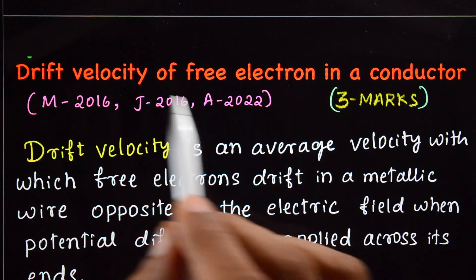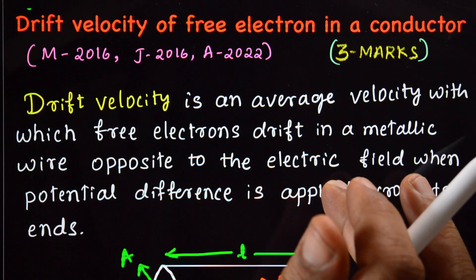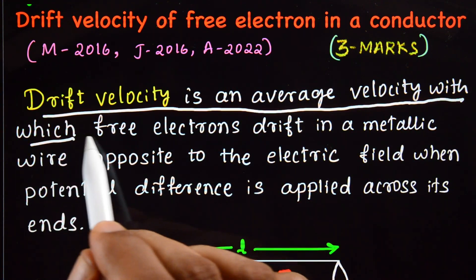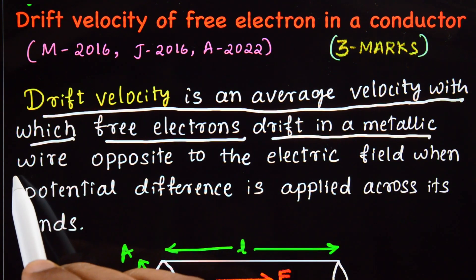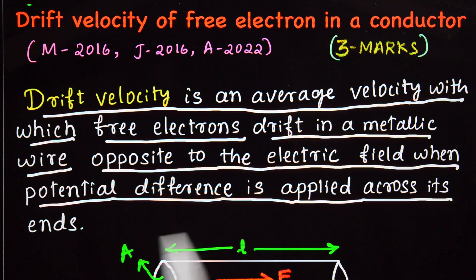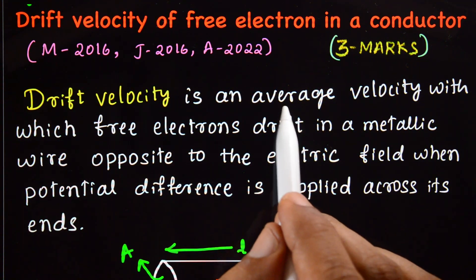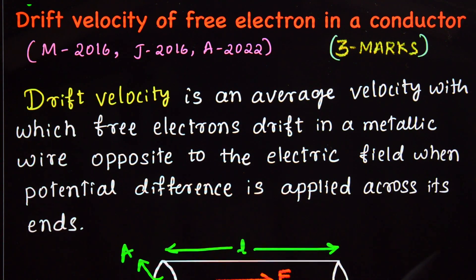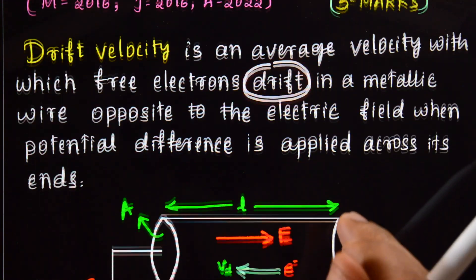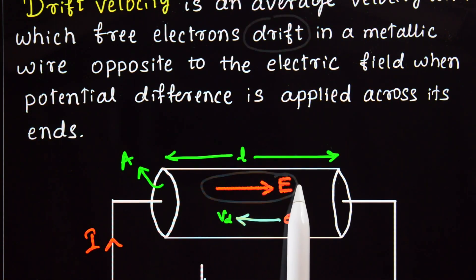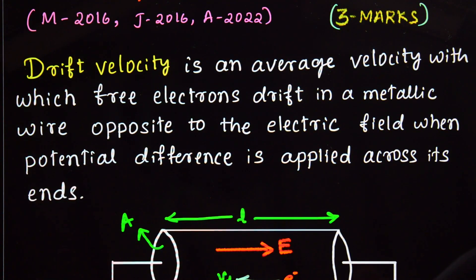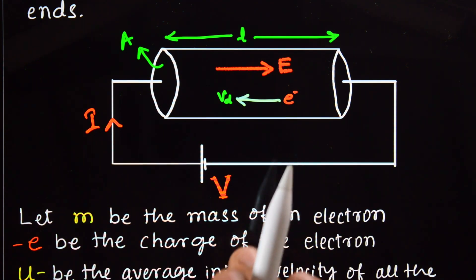Drift velocity is an average velocity with which free electrons drift in a metallic wire opposite to the electric field when potential difference is applied across its ends. This is the direction of electric field, but in the opposite direction drift velocity occurs. First, write the definition. Next, draw the diagram.